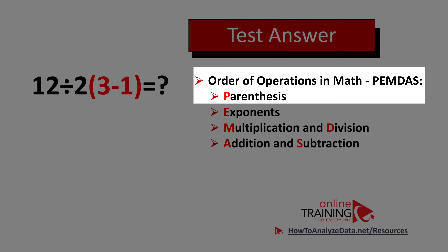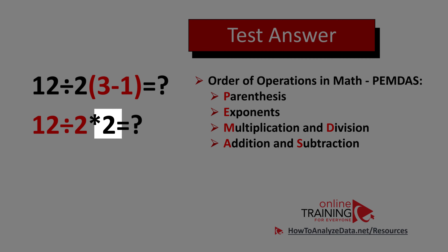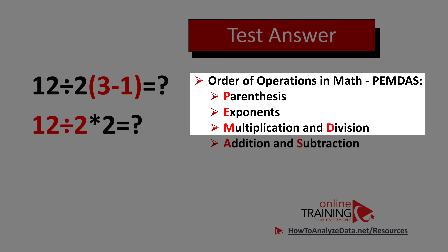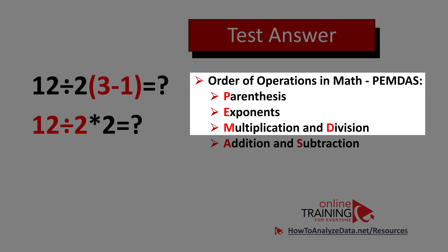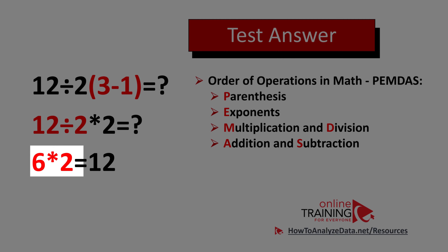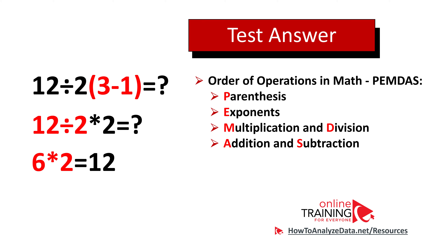The order of operations in math tells us that the first expression to solve is inside parentheses. We first need to calculate 3 minus 1, and the answer is 2. The order PEMDAS tells us to do multiplication and division, but what it doesn't mention explicitly is that we do them from left to right. So in our case, we need to do division first — divide 12 by 2 to get 6 — and then multiply 6 by 2. So the correct answer is 12.